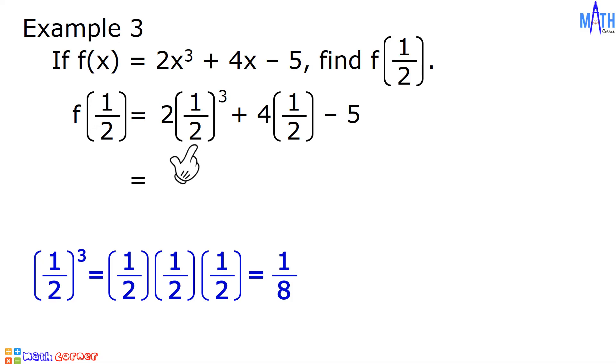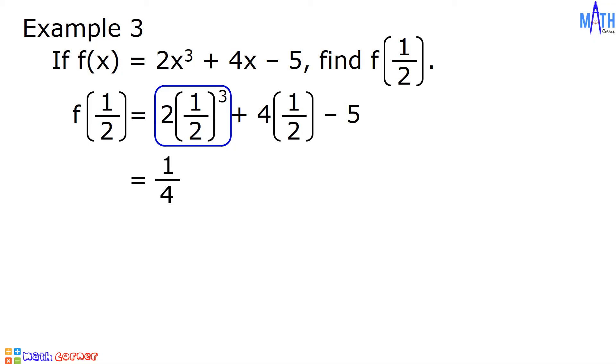Next, we will multiply by 2. 2 times 1/8 is equal to 2/8. Let us simplify 2/8 by dividing the numerator and the denominator by 2 since 2 is the greatest common factor. Therefore, 2 times cube of 1/2 is equal to 1/4.